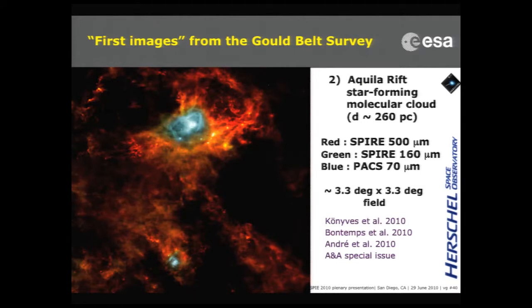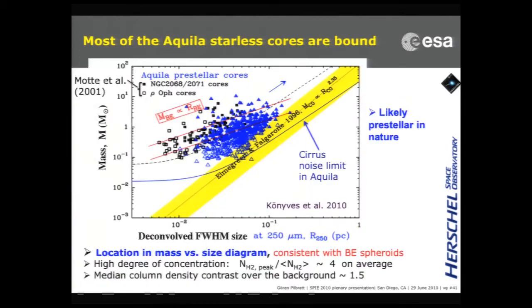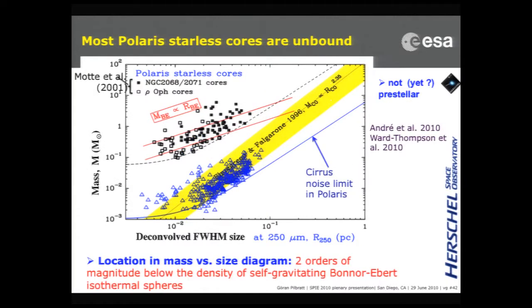The other region, which is completely different, is the Aquila Rift. Here you do have star formation going on in a very big way. When you extract the cores in the Aquila region, you can conclude that they are consistent with Bonnell-Aribus spheroids and are likely pre-stellar in nature. When you look at the same thing in the Polaris region, those clumps are not gravitationally bound and are not likely, at least not at this point, to become stars.